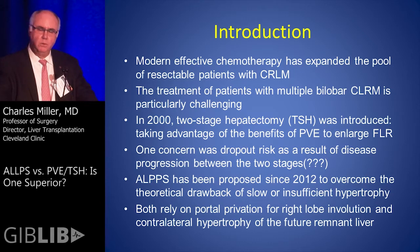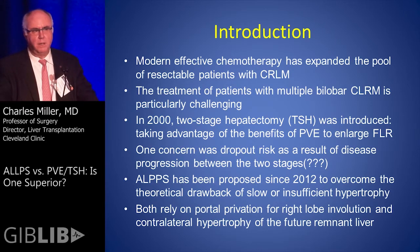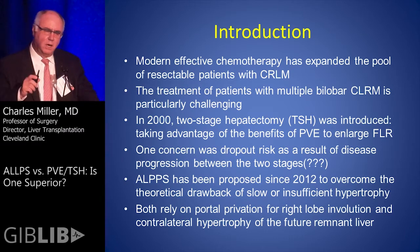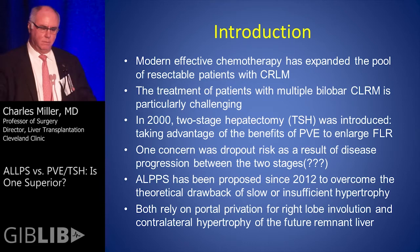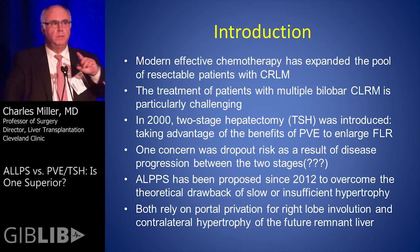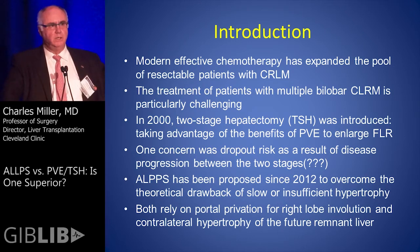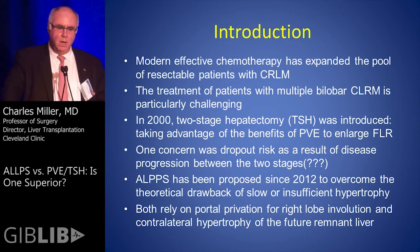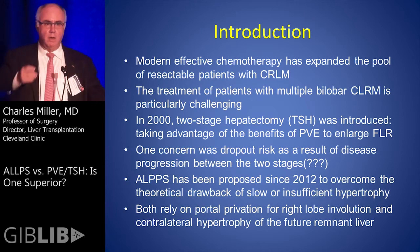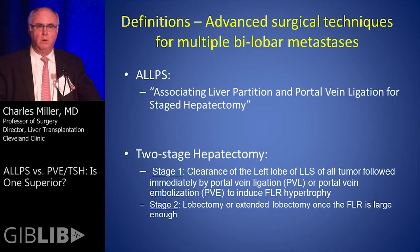ALPS has been proposed since 2012 to overcome the theoretical drawback — and I say theoretical because I don't think it's real — of slow or insufficient hypertrophy. Insufficient hypertrophy can happen, but slow — what's the rush? Both two-stage hepatectomy relying on portal vein embolization and ALPS rely on portal deprivation of the right lobe to cause right lobe involution and contralateral hypertrophy of the future liver remnant.